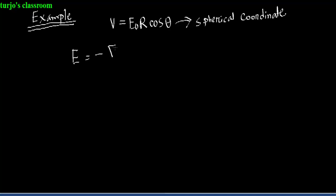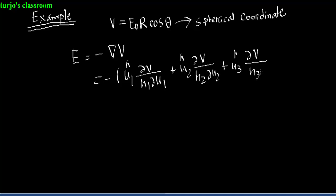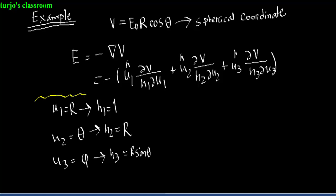So now from the discussion we just had, we can easily write the equation of nabla in a spherical coordinate system with the involving metric conversion coefficients and space coordinates. Here as u1 is r, h1 will be 1. u2 is theta, therefore h2 will be r. And u3 is phi, for which h3 will be r sin theta. So these are our required space coordinates and metric conversion coefficients.